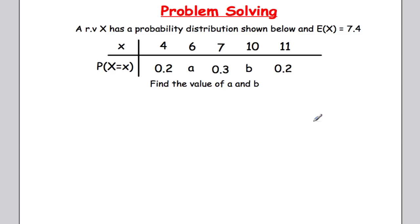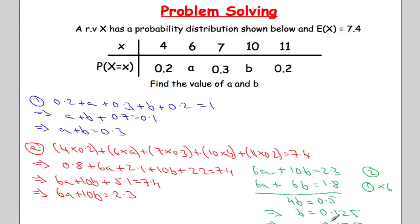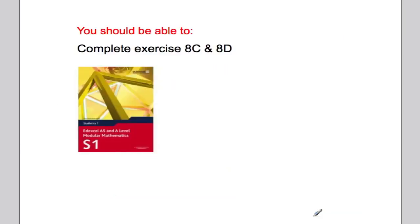Now there's a similar practice question with a discrete random variable and its expected value — see if you can form two equations and find a and b. The solution gives b = 0.125 and a = 0.175. That's it for this video. You should now be able to do exercises 8c and 8d. Best of luck and take it easy.